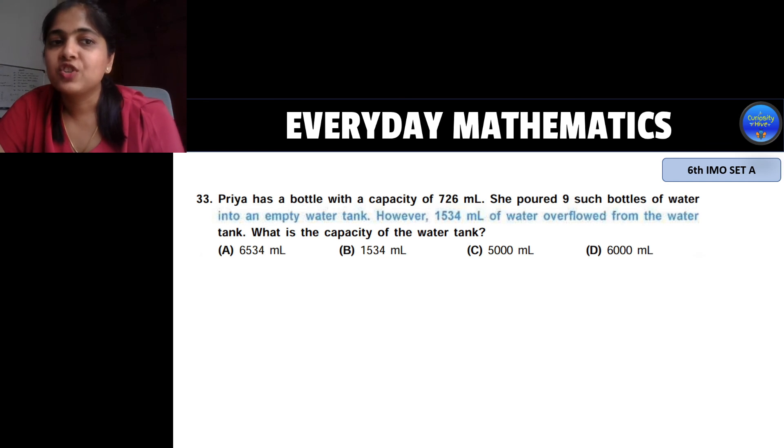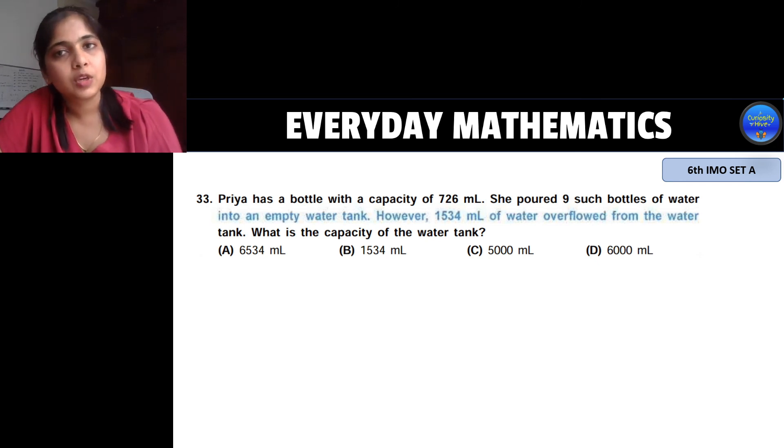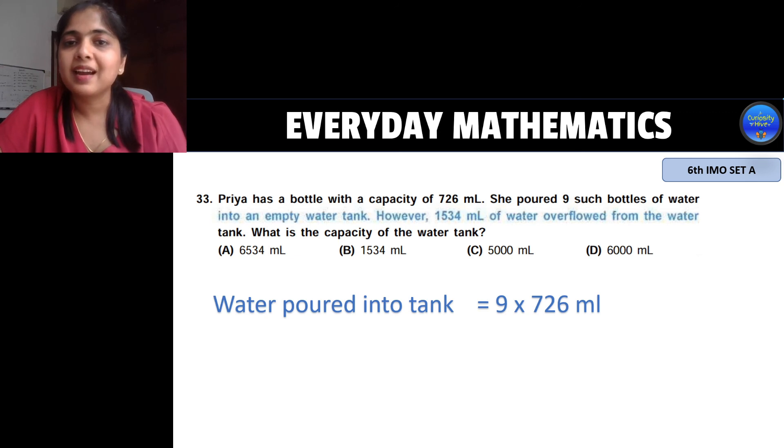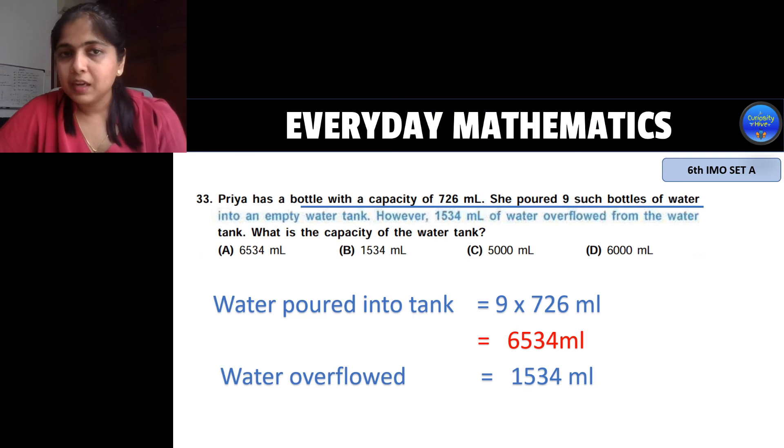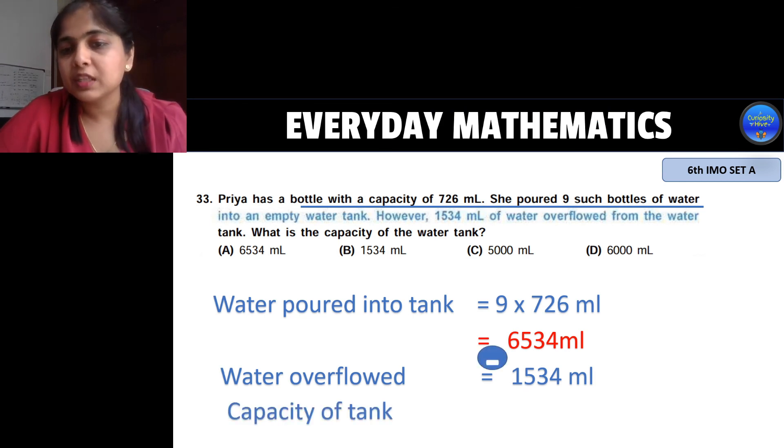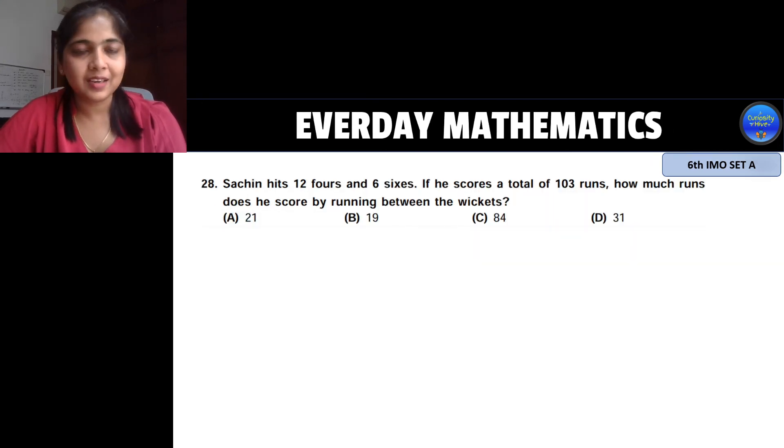Let's head to another interesting question and take your paper pens and solve it quickly. Now these kind of questions read carefully. Now Priya has a bottle with a capacity of 726 ml and she poured 9 such bottles of water into an empty tank. So these are simple step problems. Let me write the steps which will explain to you these questions clearly. So water poured into tank is 9 times 726 ml correct which is equal to 6534 ml and then water that overflowed was 1534 ml. So the capacity of water is nothing but the difference between these two numbers which will give us the answer to be 5000 ml. So your answer is option C. I hope you have marked this correctly.